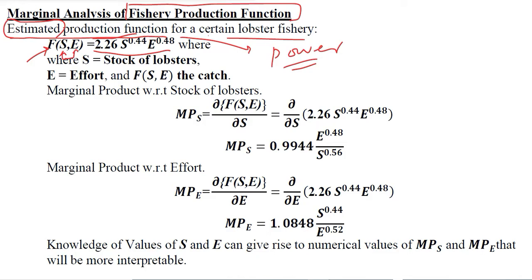In this kind of situation, we are going to follow the same rules we have learned, but this time it is partial differentiation, not ordinary differentiation. S is the stock of lobsters, and E is the effort. The effort that we put in and the existing stock of lobsters are going to determine the output of the fishery. F is the catch — the number of lobsters we have in this fishery.